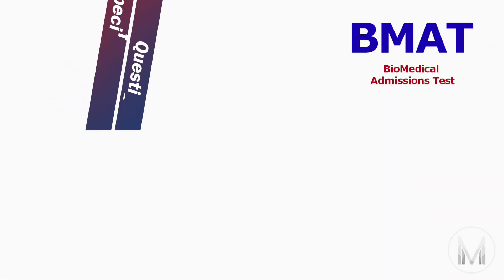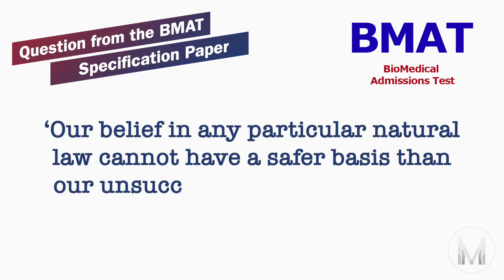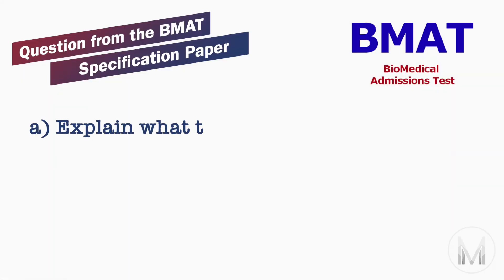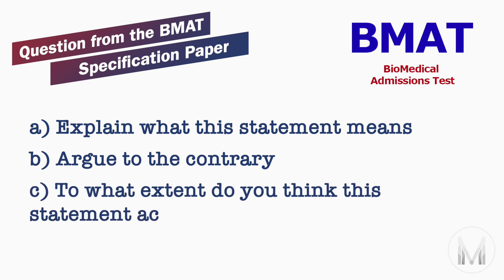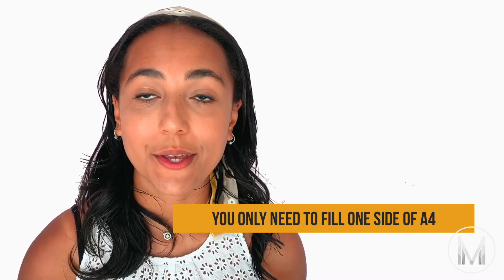I've got here the question from the BMAT specification paper and this one says: 'Our belief in any particular natural law cannot have a safer basis than our unsuccessful critical attempts to refute it' — by Karl Popper. The questions underneath to help you structure your argument are: to explain what this statement means; argue to the contrary that science may not proceed by attempting to refute hypotheses; and to what extent do you think this statement accurately reflects the nature of scientific method? That's probably one of the most difficult questions in the sample paper, but if you think about it for a bit there are probably some things you can come up with. Keep in mind you only need to fill one side of A4 so you have to be pretty concise.